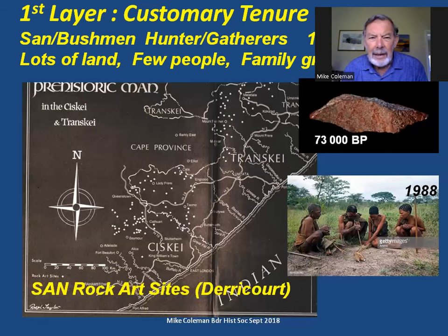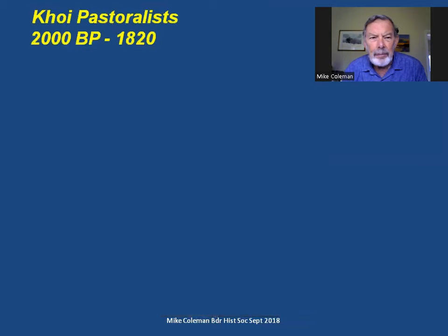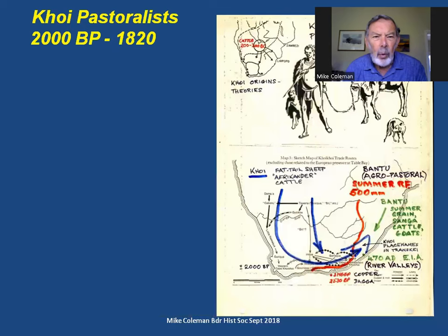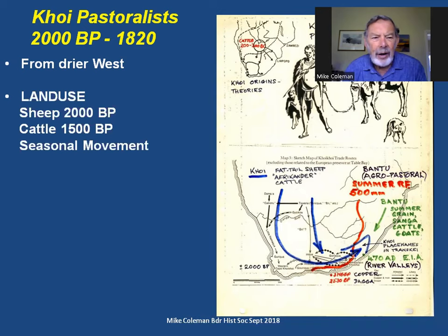The San Bushmen of our part of the world sadly no longer exist, and the date of 1988 records the death of the last genuine San Bushman in the Drakensberg of the Eastern Cape. Much more recently, the Khoi pastoralists became the predominant people in the area from about 2000 years before present or more. They moved into it from the west. Their land use differed because they were now pastoralists — they kept livestock and sheep. Records of Khoi sheep go to around 2000 years before present.